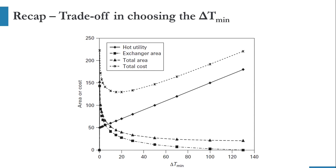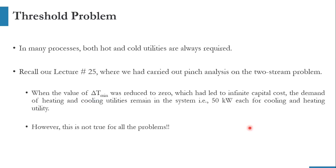That's the first part of today's activity. Now we are moving to the second part — the threshold problem. So far, we have discussed the pinched system, in which at a certain value of delta T minimum the overall system is divided into two conditions: above pinch and below pinch. For above pinch, hot utility was needed; for below pinch, cold utility was needed. But that is not always true.